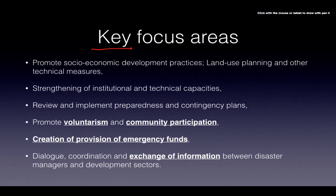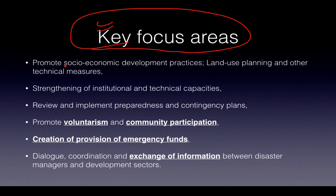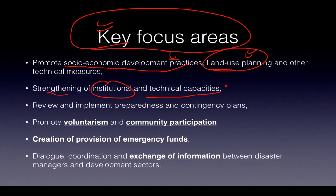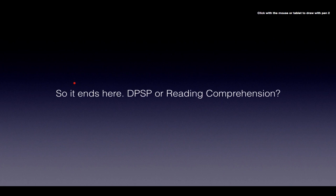Key focus areas for disaster management include: promoting socioeconomic development practices; good land use planning — for example, not allowing people to live in riverbeds as in Uttarkashi; strengthening institutional and technical capacities; reviewing and implementing preparedness and contingency plans; promoting volunteerism and community participation; ensuring adequate emergency funds and manpower; and enabling exchange of information through coordination between disaster managers and development sectors.